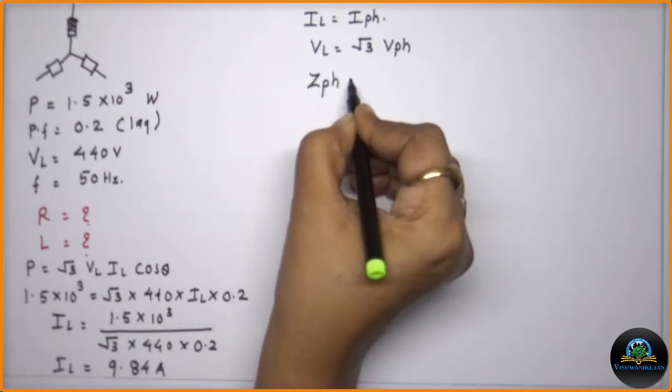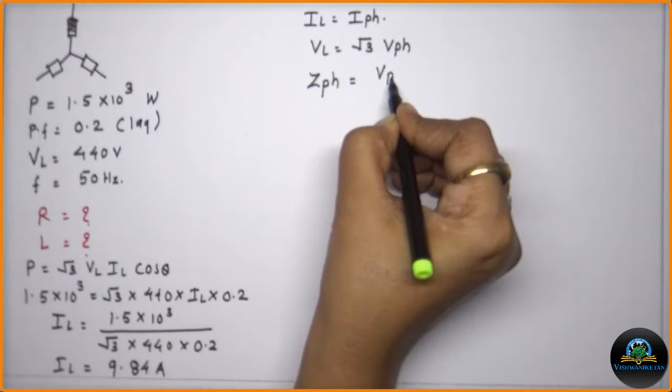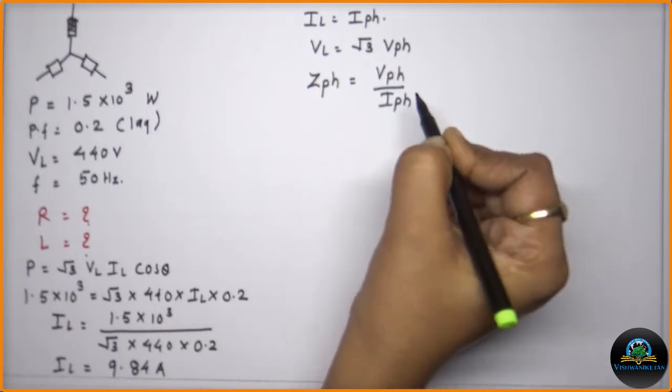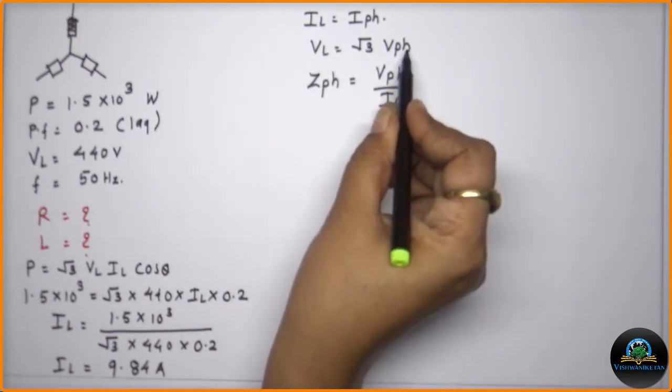ZPH is always represented as ZPH which is nothing but equal to VPH upon IPH. Now as it is a star connection, we already written that VL is equal to root 3 times VPH.